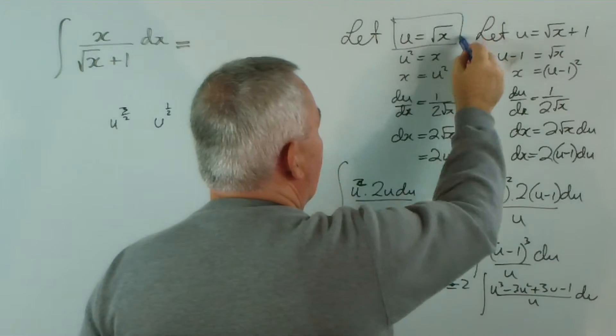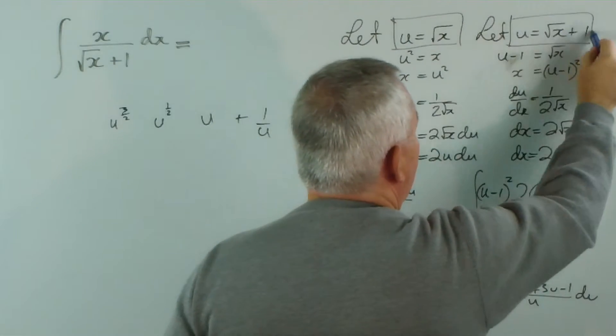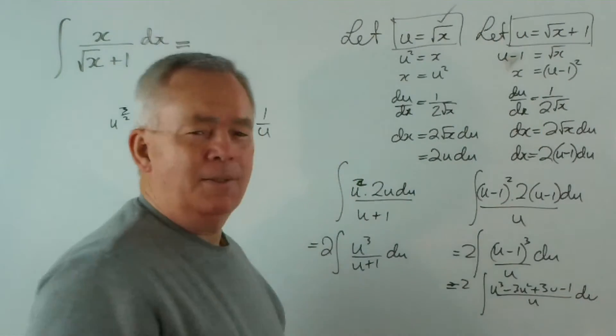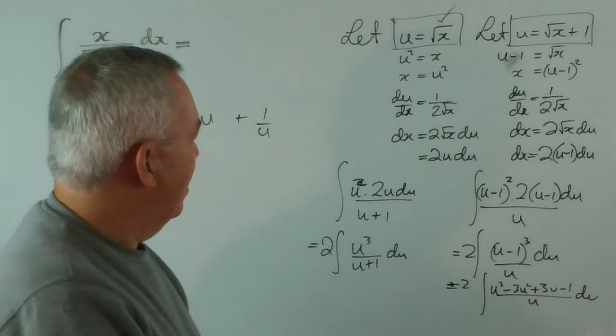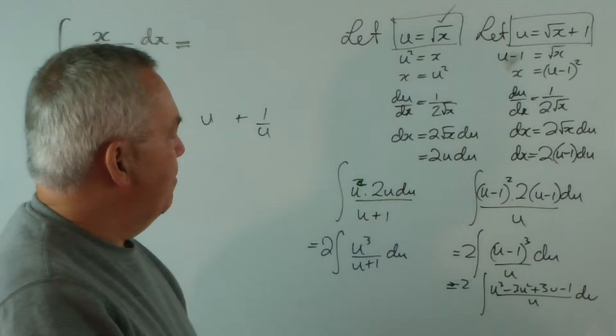So, although they're both lovely substitutions, and although they both lead to quite reasonable and quite readily integratable integrals, when you come to the substitution at the end, one is far superior. And the general rule of thumb is, if you're going to make a substitution, choose the simpler one. That's the general one, choose the simpler one.